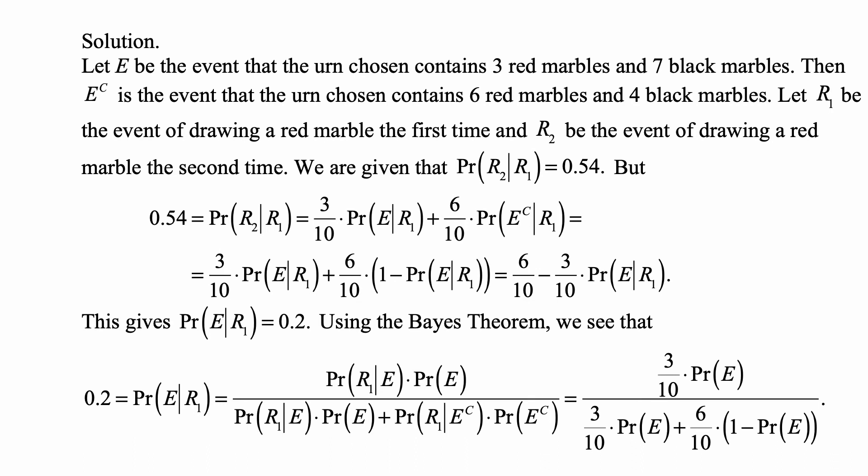Using the Bayes theorem, we see that 0.2, which is known to be probability of E given r1, equals probability of r1 given E times probability of E divided by probability of r1 given E times probability of E plus probability of r1 given E complement times probability of E complement. And that's equal to 3/10 times probability of E over 3/10 times probability of E plus 6/10 times 1 minus probability of E.